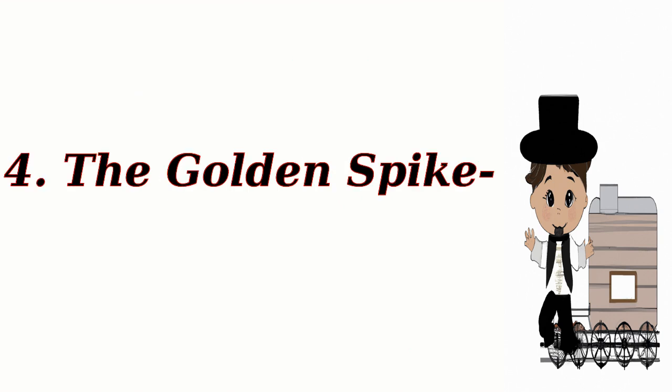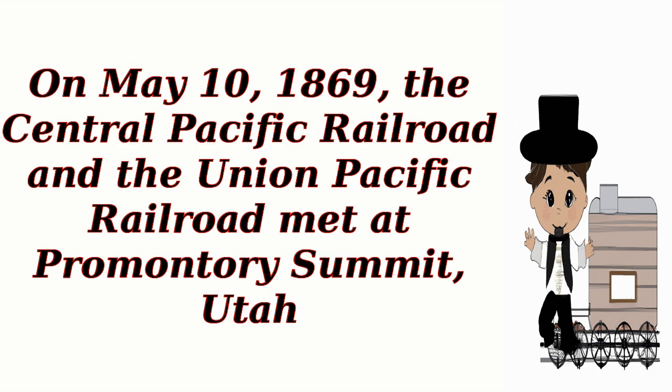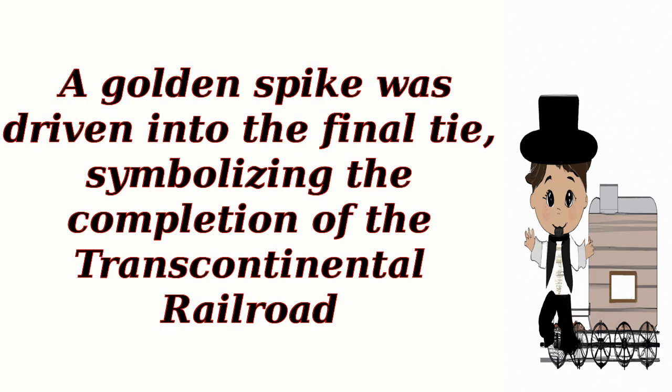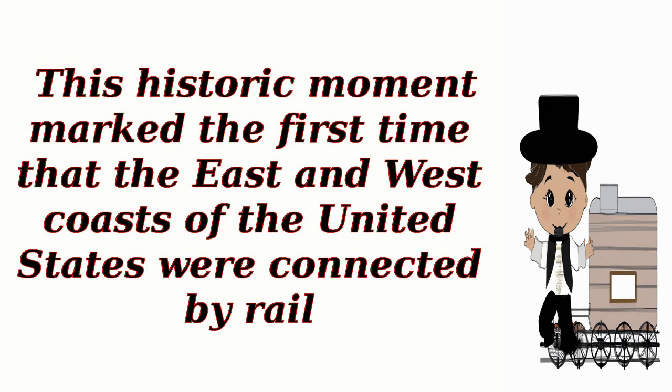The Golden Spike. On May 10, 1869, the Central Pacific Railroad and the Union Pacific Railroad met at Promontory Summit, Utah. A golden spike was driven into the final tie, symbolizing the completion of the Transcontinental Railroad. This historic moment marked the first time that the east and west coasts of the United States were connected by rail.